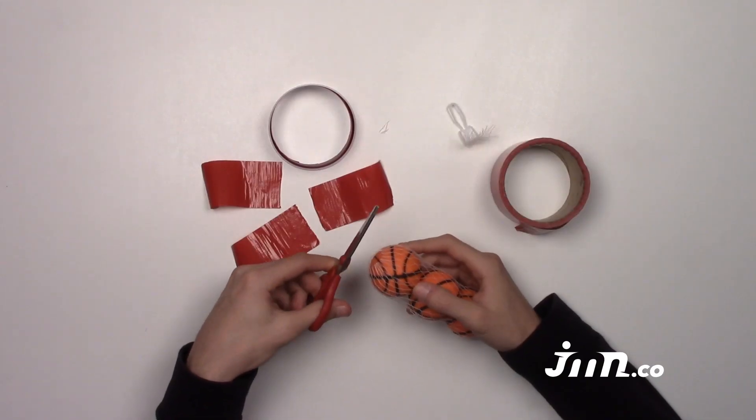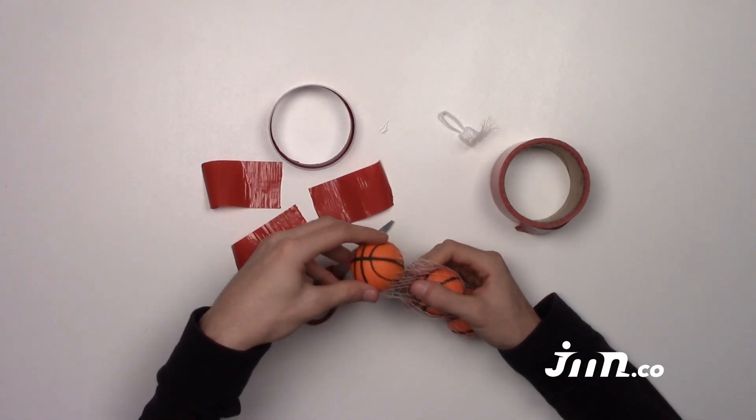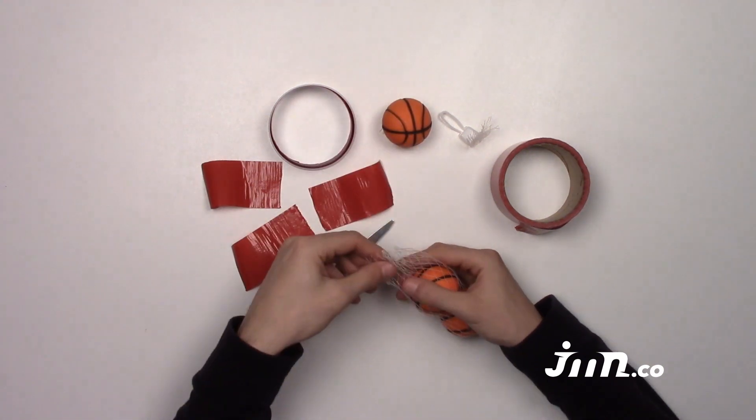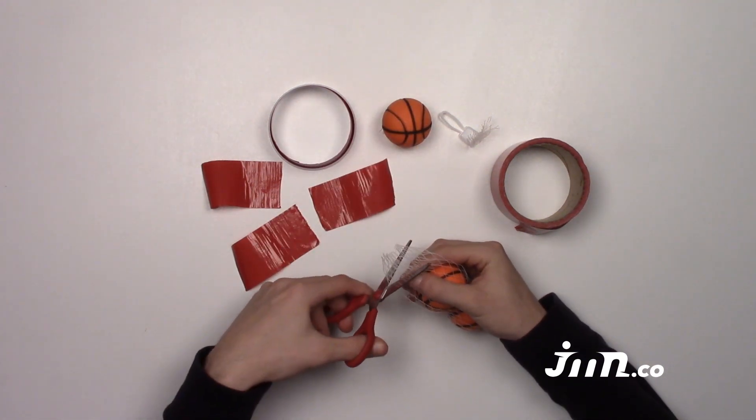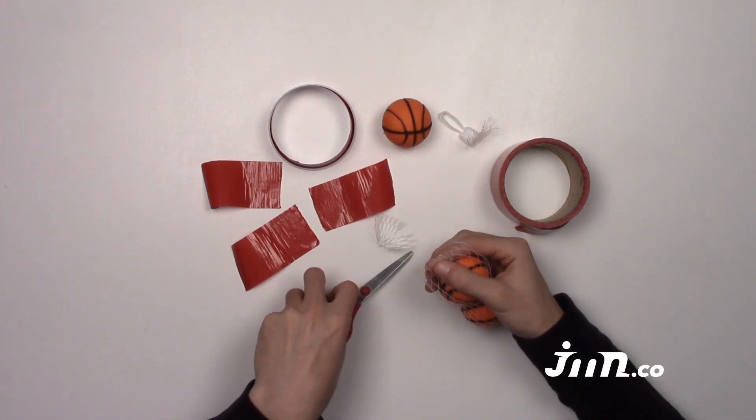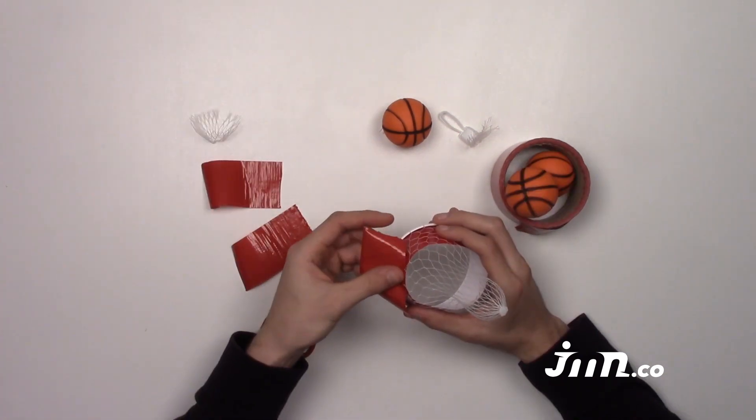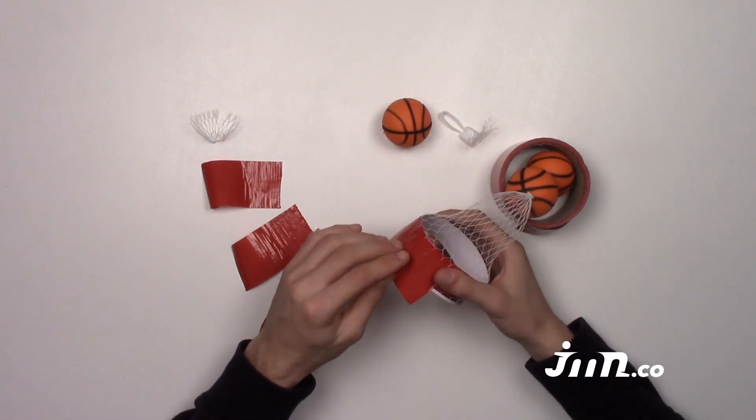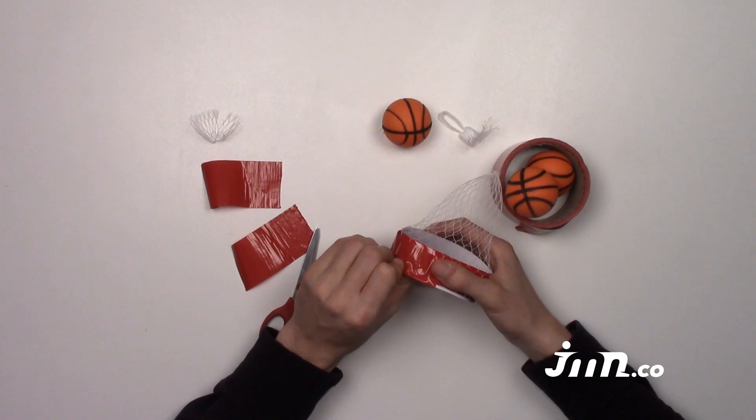Step 5: Add a net to the cup. You can use the net bag the bowls came in or a small net bag from something else. Attach the net using tape. You can also draw a net on the cup using a black marker.